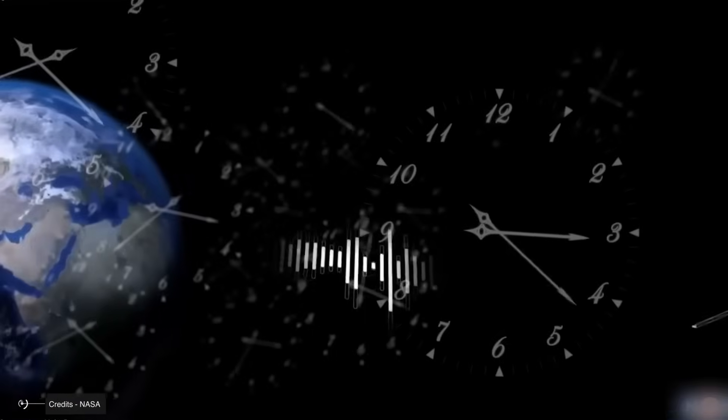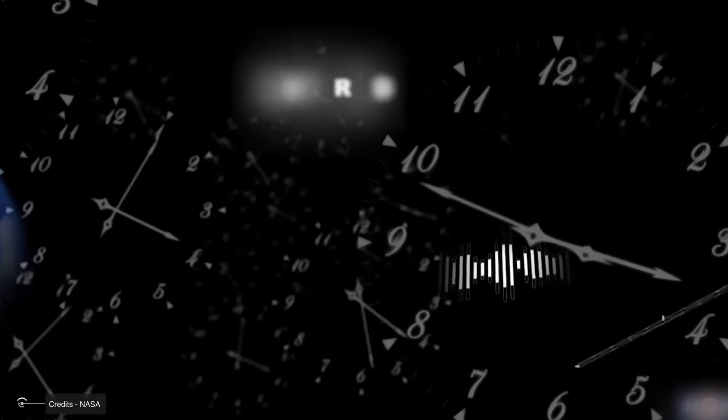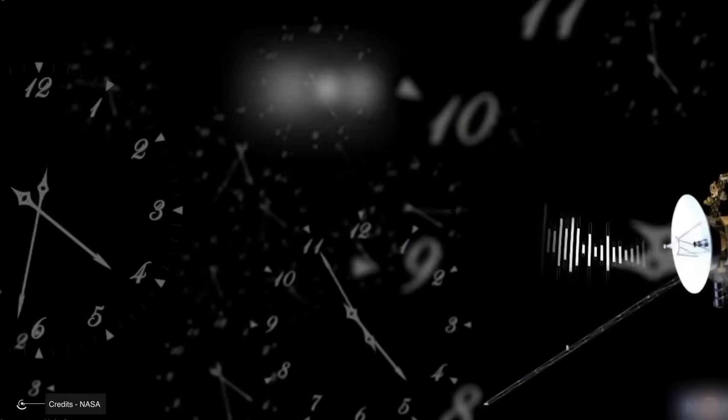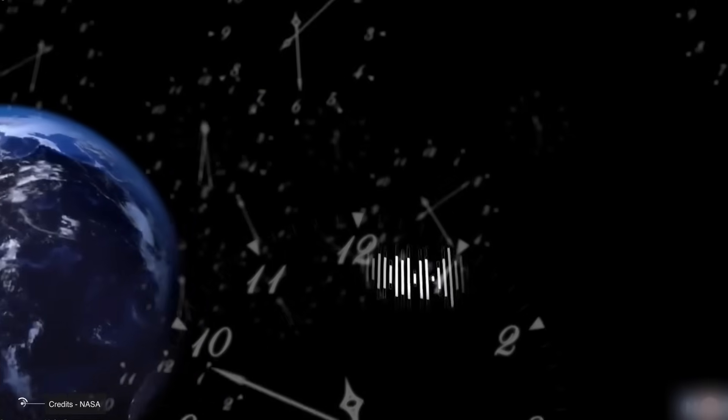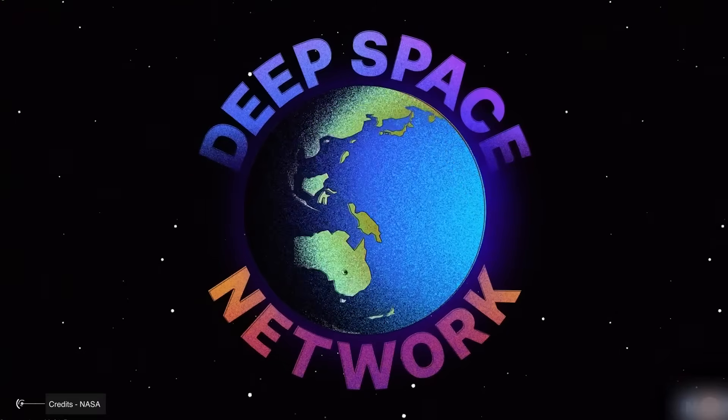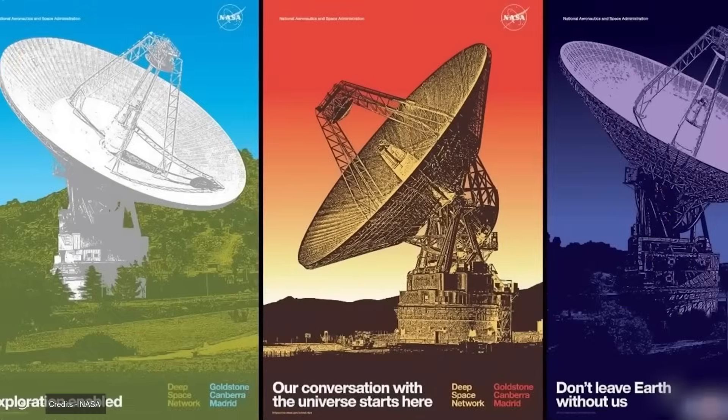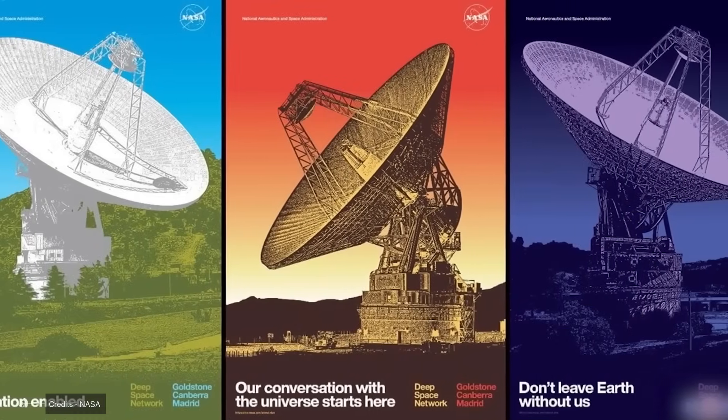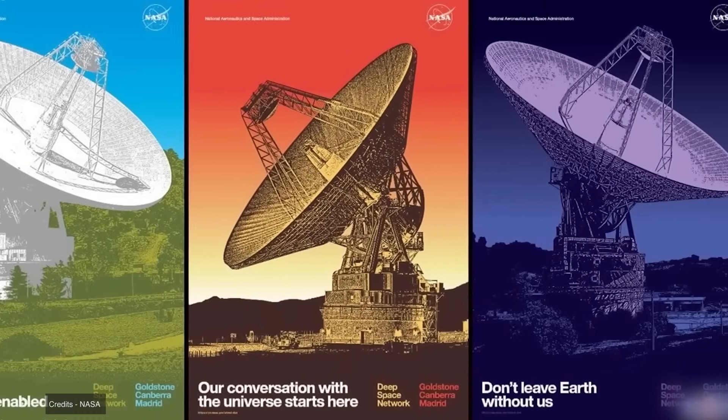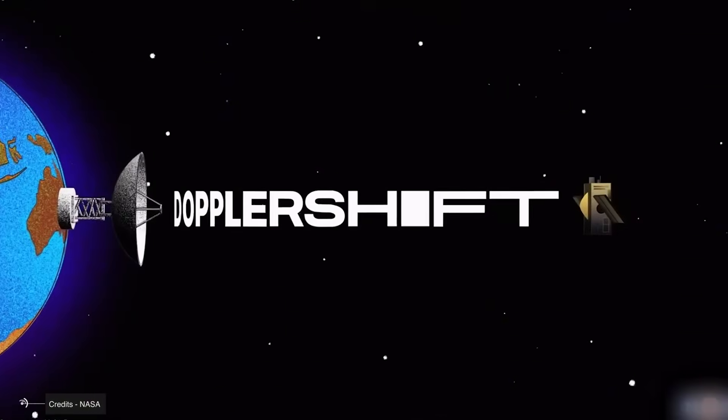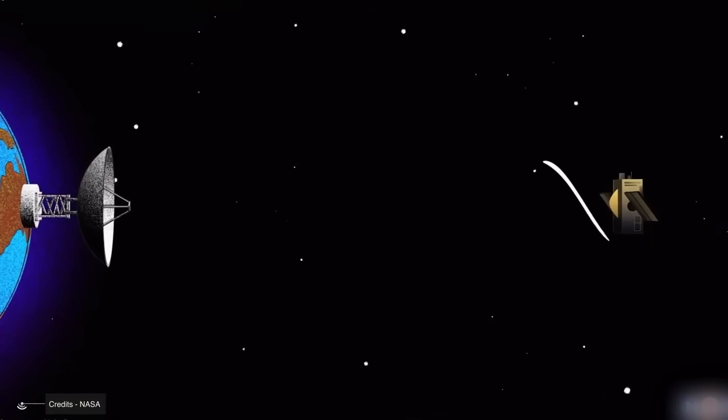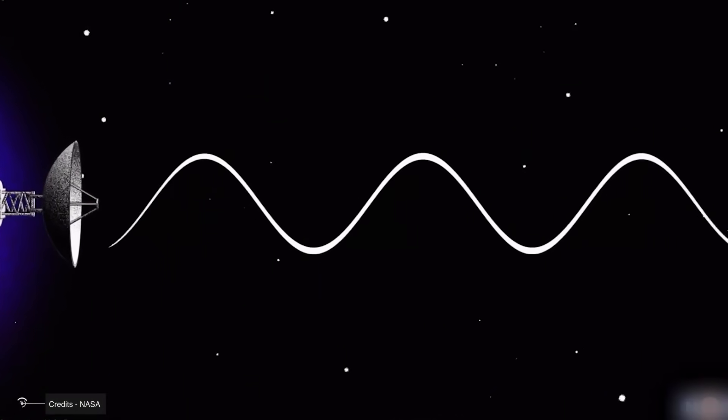Furthermore, the transmission speed is very low, barely 160 bits per second, and the signals take more than 22 hours to reach Earth. With such limited capacity, the quality and quantity of scientific data they can collect are significantly reduced. NASA estimates that between now and next year, 2026, the last active scientific instruments will stop working and be shut down.